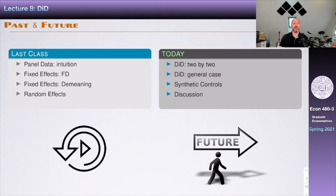Today it's going to be related because diff-and-diff is sort of like another model that exploits two dimensions. I'm going to start describing intuitively what diff-and-diff is about using what I call a two-by-two model, which is going to be two groups and two time periods. Then, once we understand the intuition there, we're going to move to the general case, which mostly adds notation. And then after that, we're going to discuss synthetic controls.